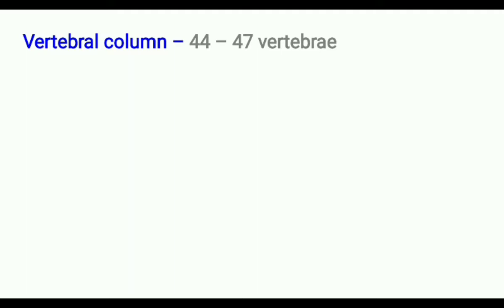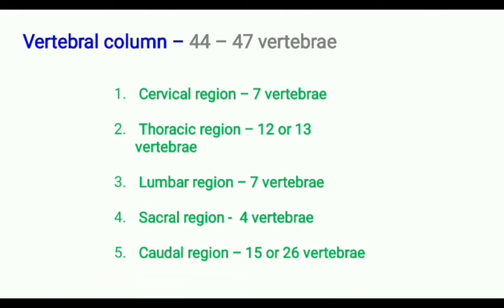The vertebral column of rabbit is formed of 44 to 47 vertebrae and has 5 regions. They are: cervical region consisting of 7 vertebrae, and thoracic region consisting of 12 or 13 vertebrae.